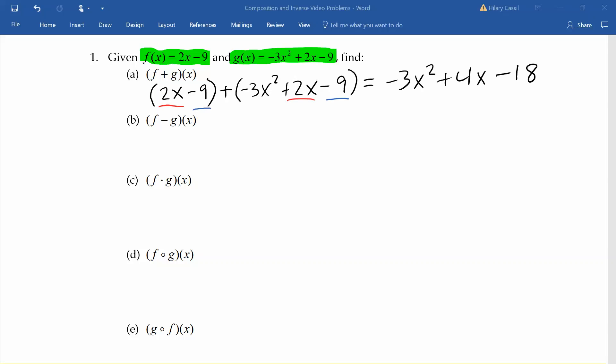We're going to do a similar thing when we subtract these functions. A lot of people like to think of the subtraction as a negative 1 that we are going to distribute to each of the terms in our second parentheses. After we do that, we can combine our like terms. The 2x minus 2x will cancel, and negative 9 and positive 9 will cancel. Our final answer is just positive 3x squared.